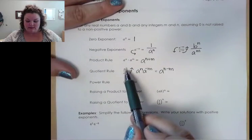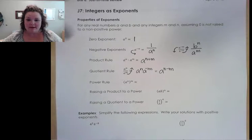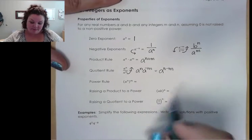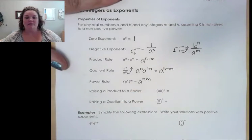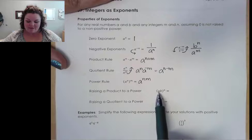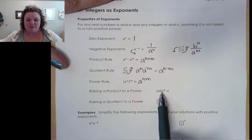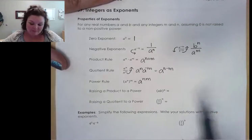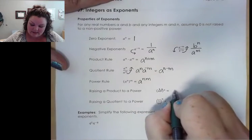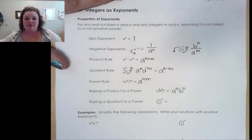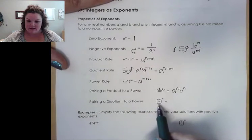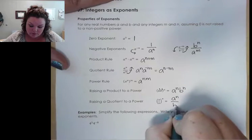Power rule says if we have a base with an exponent and it's raised to another exponent, we can just multiply those exponents. And if we have more than one base inside our parentheses, like an a and a b within that base, then this power n needs to be distributed to both — and notice that's distributing to their exponent, not to the actual number itself. So if I distribute that n, that gives me a to the nth power, b to the nth power. The same thing is true for raising a fraction to a power: we have to distribute that n to the top and the bottom, giving us a to the n over b to the n.